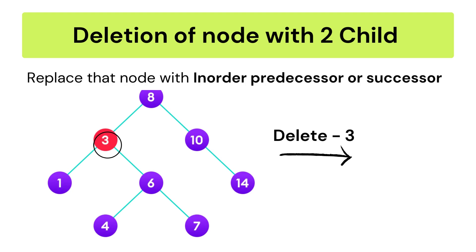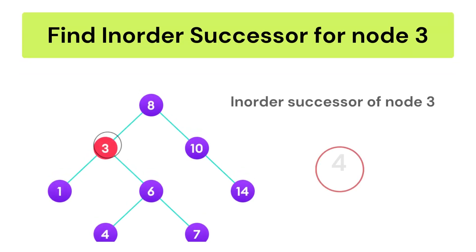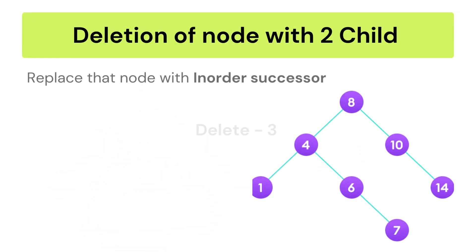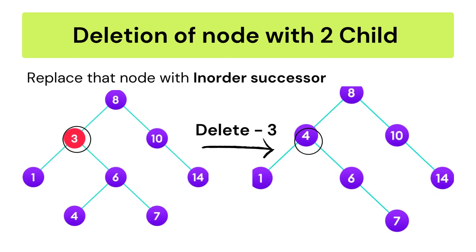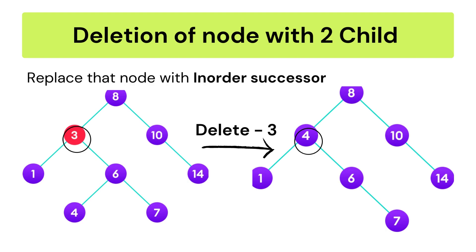To delete a node with two children, replace it with either its in-order predecessor or in-order successor. Let's see with an example: we delete node 3 from this BST. Node 3 is present and has both a left subtree and a right subtree, meaning it has two children. We use the in-order successor of 3, which is the smallest element in its right subtree — elements are 4, 6, and 7, so the smallest is 4. We replace 3 with 4 and then delete the original 4 node. After deletion, 3 is replaced with 4 and the original 4 node is removed.